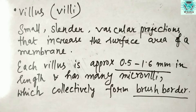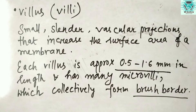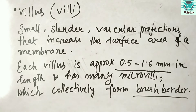The duodenum is largely responsible for the breakdown of food in the small intestine using enzymes. It also regulates the rate of emptying of the stomach via hormonal pathways. The villi of the duodenum have a leafy appearance, which is a histologically identifiable structure. In the next slide, we will go through the structure of villi and microvilli brush border.